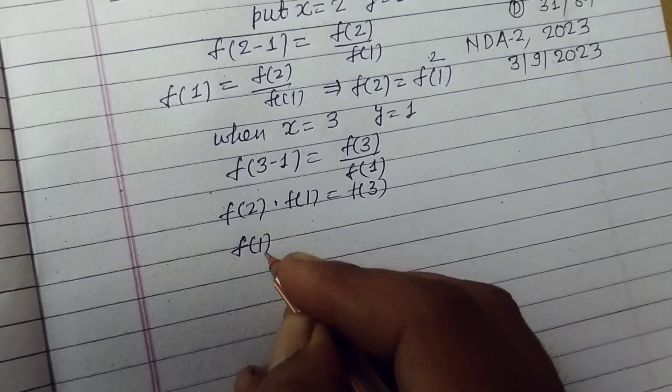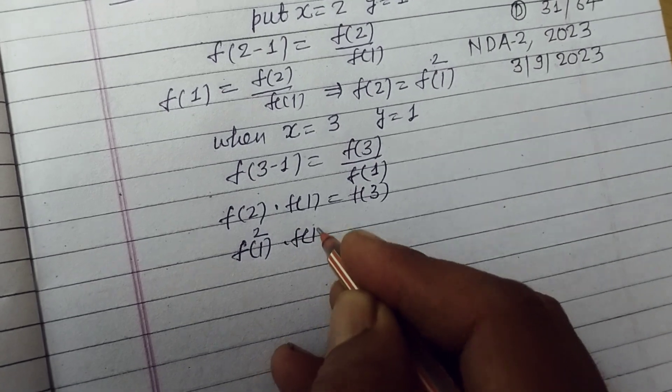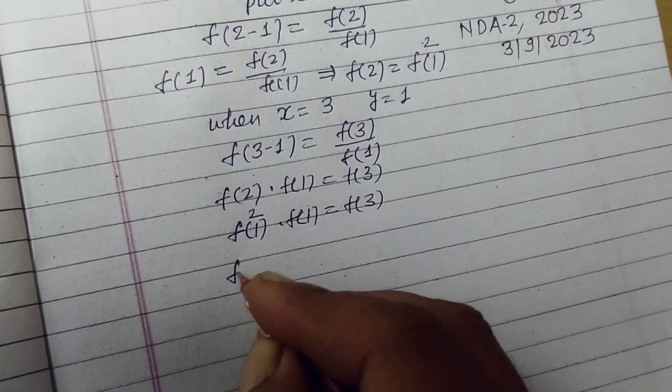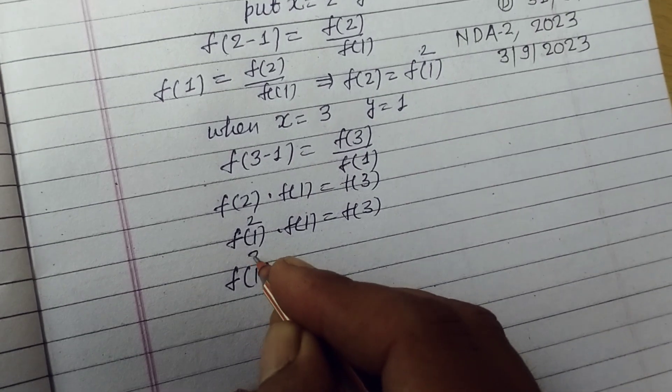which is f(1) square into f(1) equal to f(3). Therefore f(3) equal to f(1) cube.